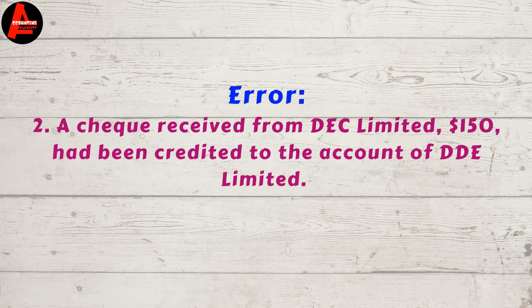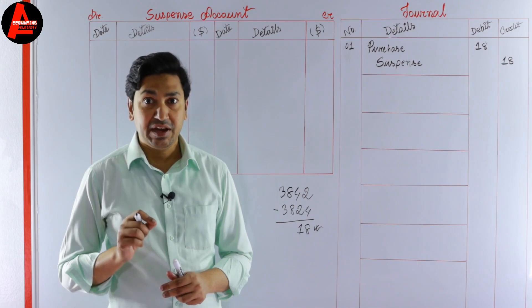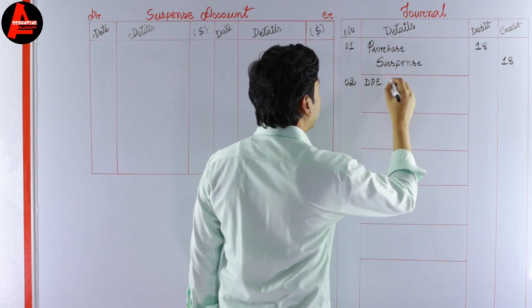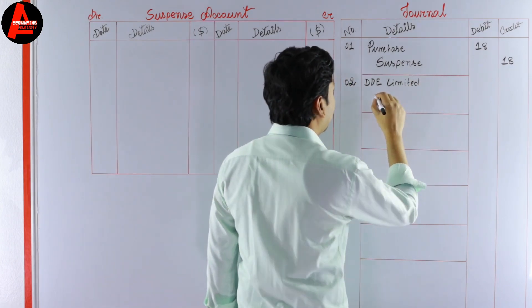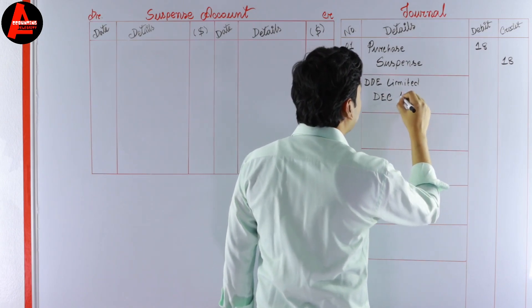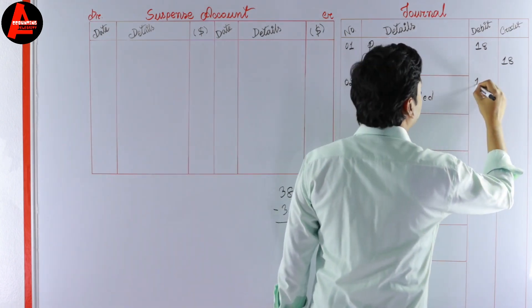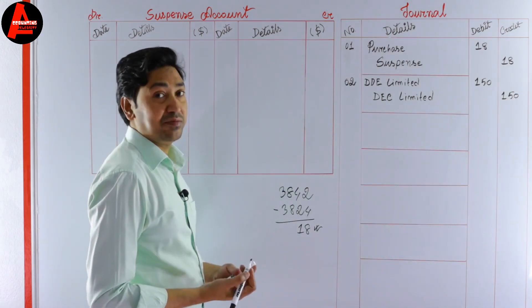Number two: a check received from DEC Limited, 150 dollars, had been credited to the account of DDE account mistakenly. To rectify this, DDE account to be debited and DEC Limited account to be credited. The amount is 150 dollars on the debit and the same amount on the credit column. So the second mistake is rectified.